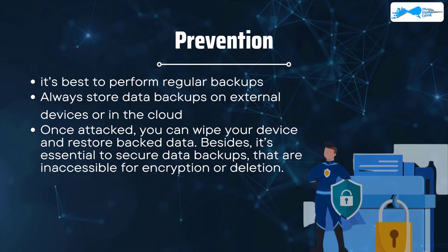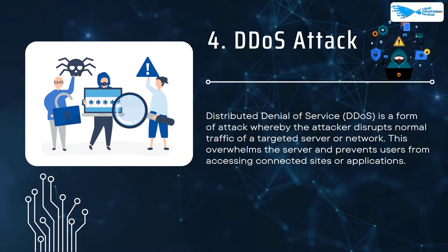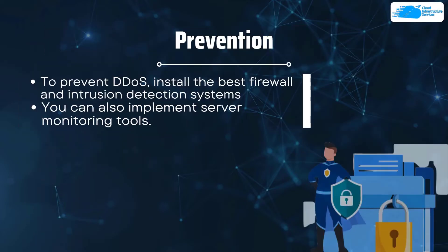Number four is DDoS attack, or Distributed Denial of Service. This is a form of attack where the attacker disrupts the normal traffic of a targeted server or network, overwhelming it and preventing users from accessing connected sites or applications. To prevent a DDoS attack, install the best firewall and intrusion detection systems, and implement server monitoring tools.